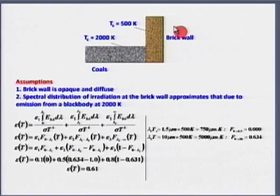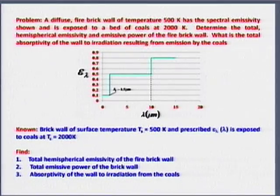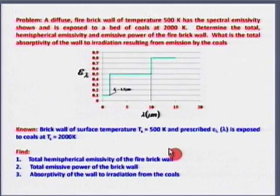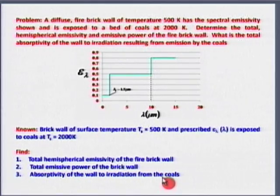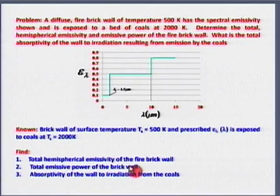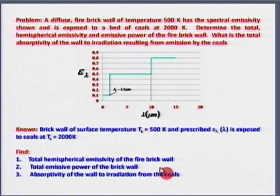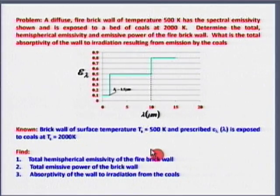Opaque means tau equals zero, so alpha plus rho equals 1. I cannot use epsilon equals alpha. Second assumption: the spectral distribution of irradiation at the brick wall approximates emission from a black body at 2000 K. Going to the fundamental definition, epsilon(T) is the integral from 0 to infinity of epsilon-lambda times E-b-lambda divided by sigma-T^4 d-lambda. This is split at the discontinuities of the spectral emissivity: 0 to 1.5 micrometers, 1.5 to 10 micrometers, and 10 to infinity — all at the brick wall temperature of 500 K.